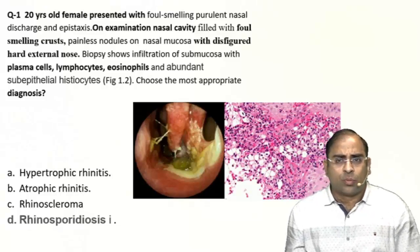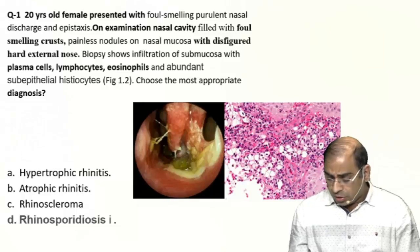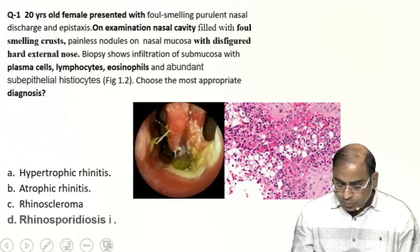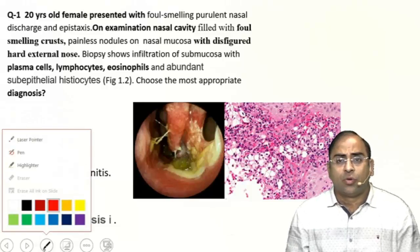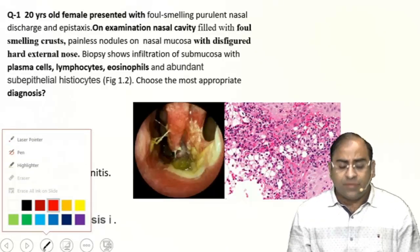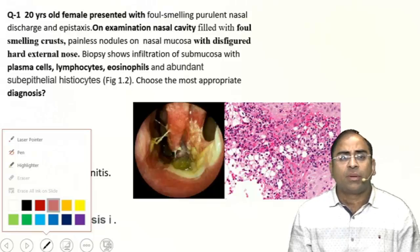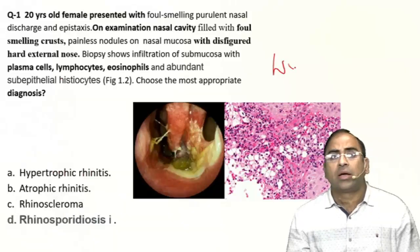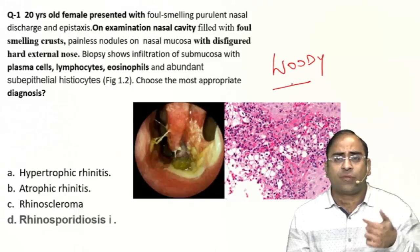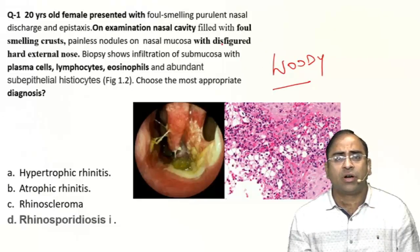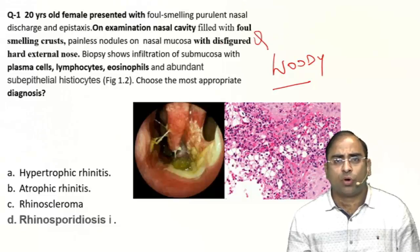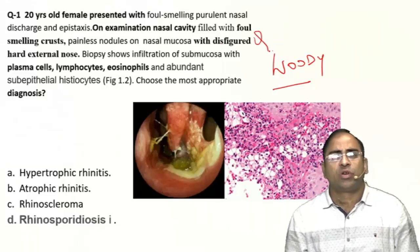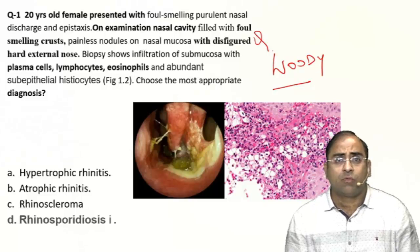The keyword here is 'hard' or 'woody' nose. If the word 'woody nose' is in the MCQ, always remember it points to rhinoscleroma. The examiner, instead of using the word 'woody,' has written 'disfigured' — this is the most important word in the MCQ with which we can crack it.